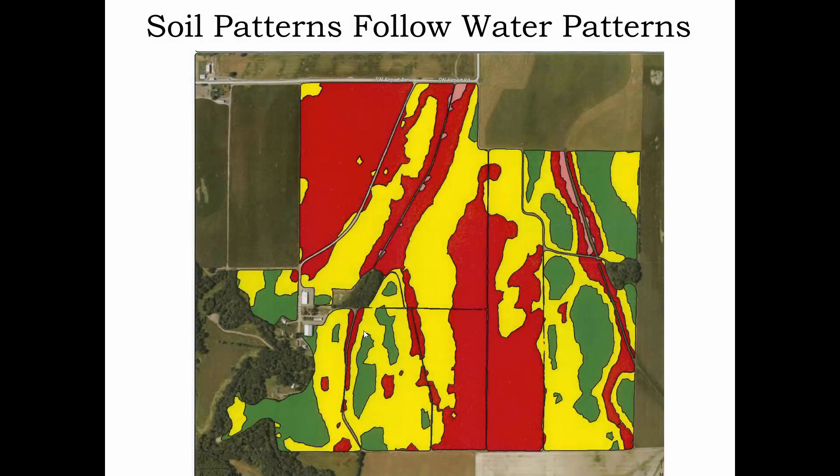It's not just water that moves in this watershed tree pattern. Soils follow this pattern as well. The upper watershed is weathered over time and soils are moved and distributed by water. So oftentimes soil maps will reflect the same branching drainage pattern.